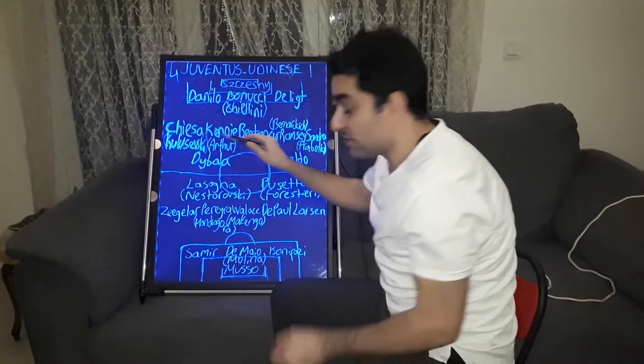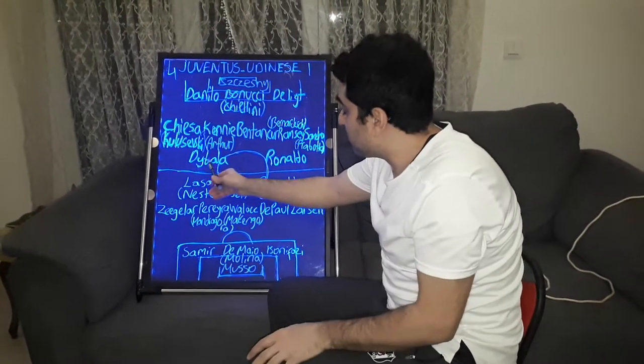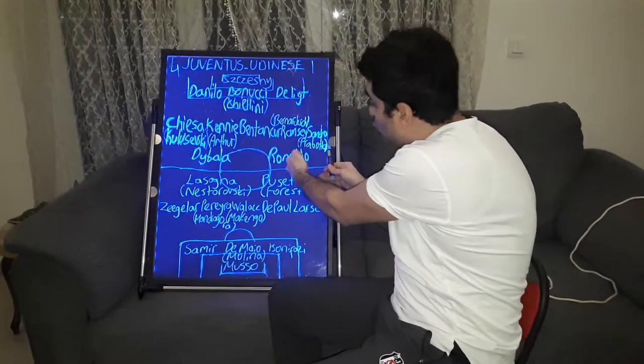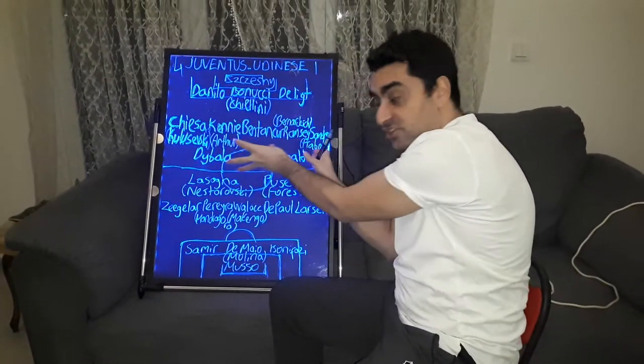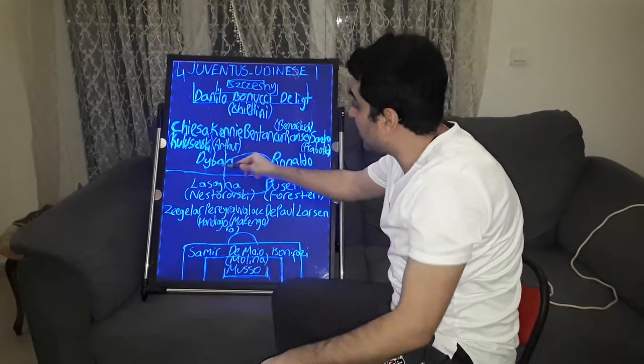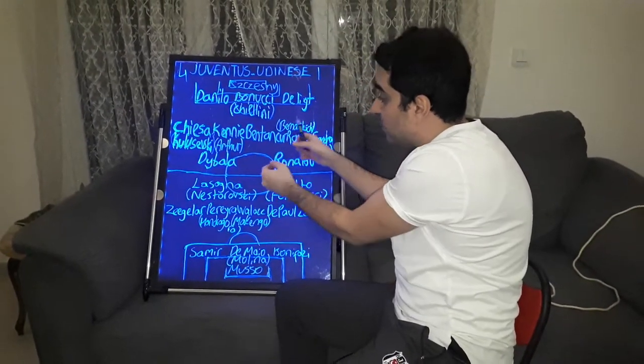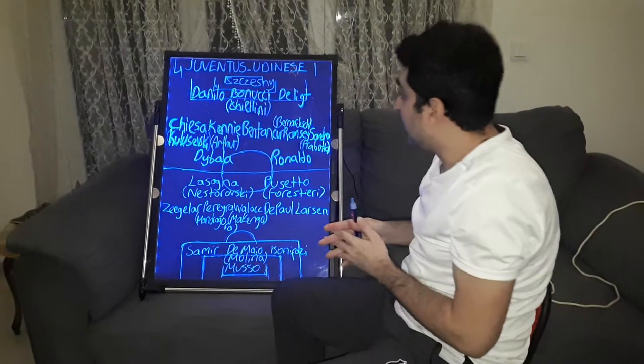Dybala was so ambitious and hard-working. Sometimes he came to left, sometimes Ronaldo came to right. They changed their positions between each other. Dybala came back to midfield and he got the balls and brought them forward.